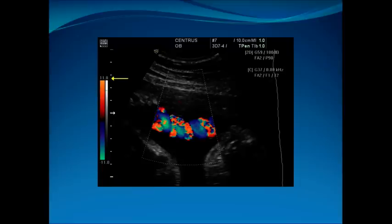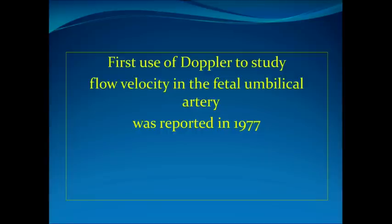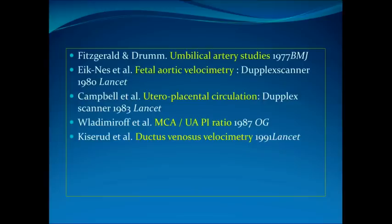This image shows the colour flow superimposed over the umbilical vein and arteries. The umbilical artery Doppler was first used in a study that looked at flow velocity in the fetal umbilical artery, reported in 1977, so it's a tool that has been in use for a very long time. These are the studies that first discussed the use of Doppler in obstetric ultrasound.